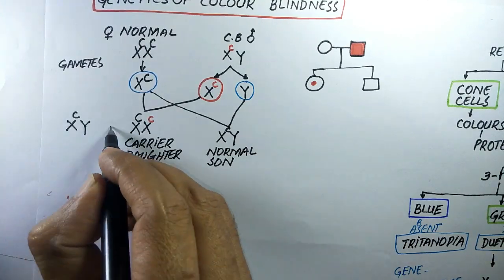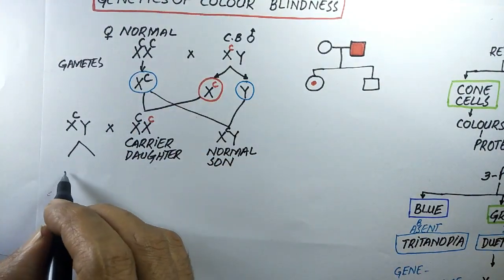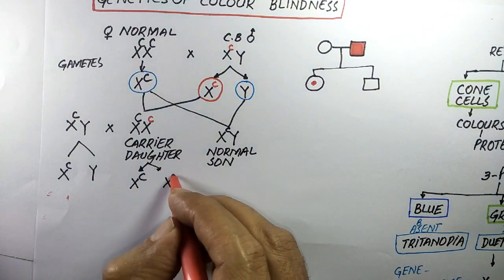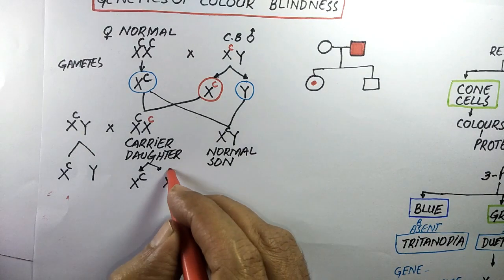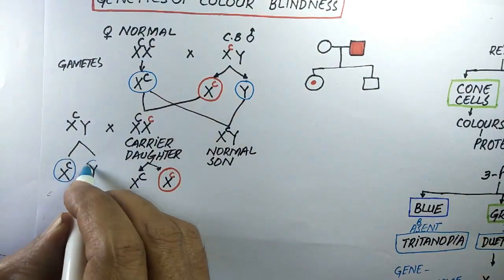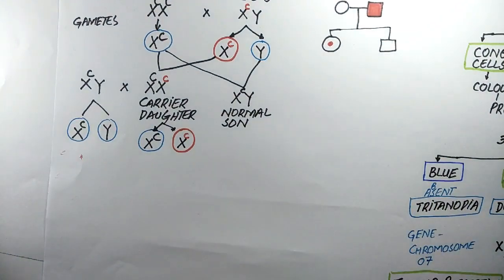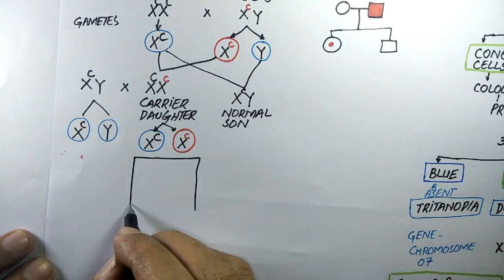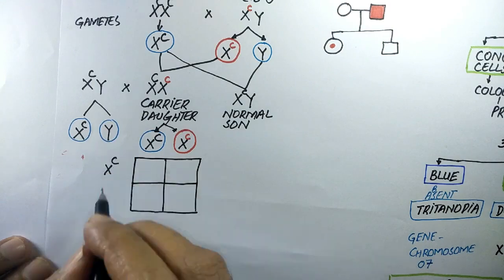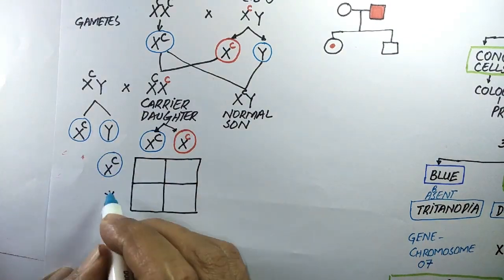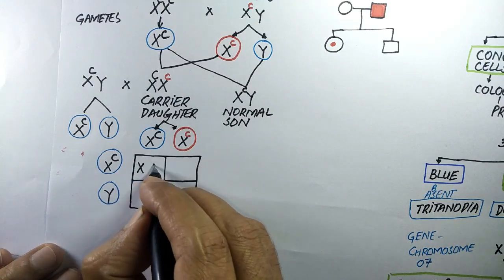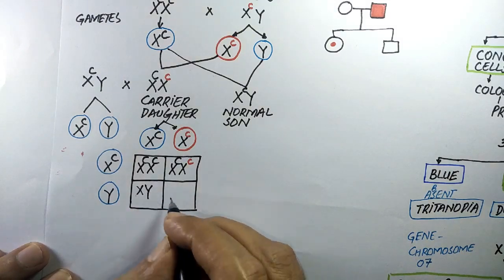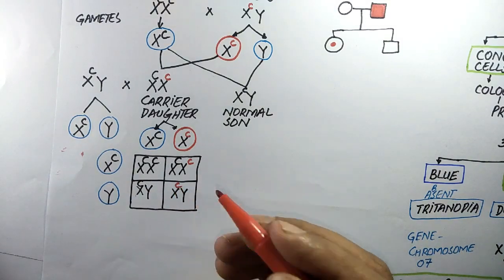If this carrier daughter marries a normal male, the normal male produces two types of gametes — one containing the X chromosome and other with the Y chromosome. The carrier daughter also produces two types of gametes: one with the normal gene and one with the mutated gene. All daughters will have normal color vision due to the normal X chromosome from their father, while 50% of sons will have normal color vision and 50% of sons will be colorblind due to the mutated gene inherited from their mother.